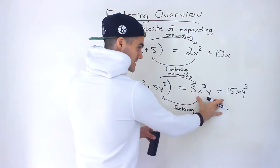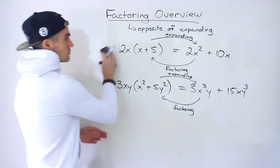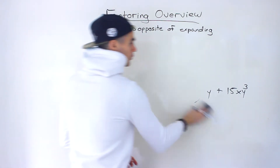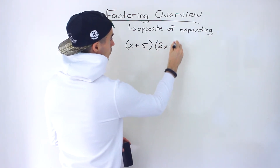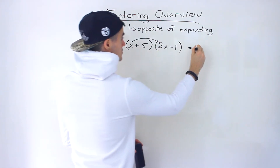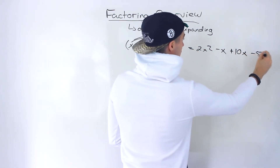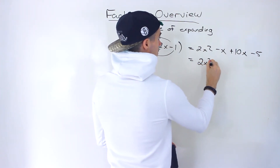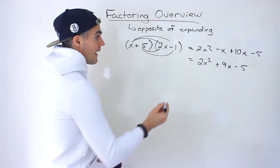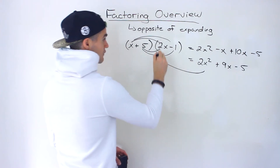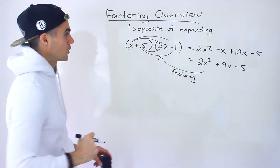With expanding, we were given the factored form and the expanded form was the answer. With factoring questions, we're given the expanded form and the factored form is the answer. We can also factor in terms of two binomial factors. For example, we've expanded (x + 5)(2x − 1) by FOILing it out: 2x squared − x + 10x − 5, and combining like terms gives 2x squared + 9x − 5. Now we're going to be given something like 2x squared + 9x − 5 and factor it back into those two factors using a method called decomposition, which we'll cover in a future section.